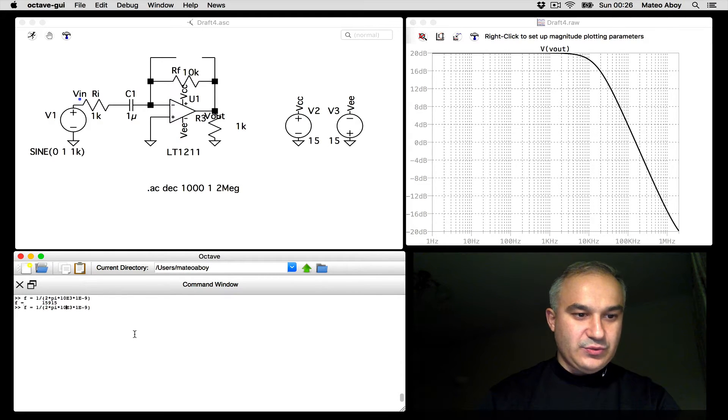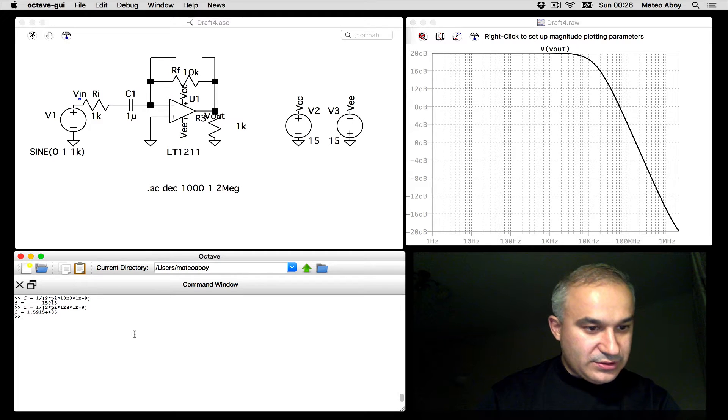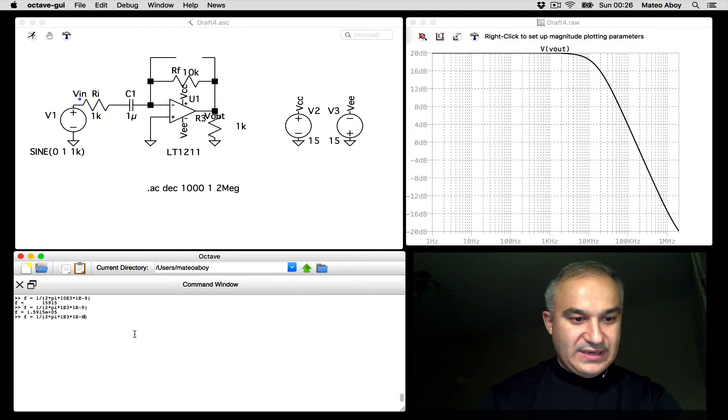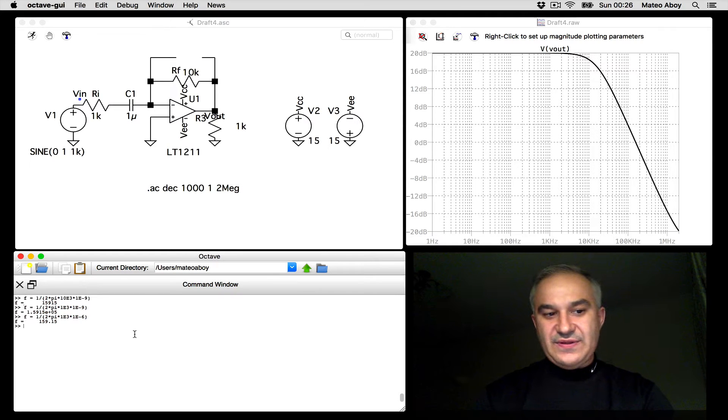Now, the corner frequency that we expect in this case, 1 over 2π, 1K, 1μ. It's very low. So... Oh, sorry, here's a go. 1μ minus 6. So it's 159.